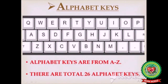After number keys, now I am going to explain alphabet keys. These keys are called alphabet keys. Alphabet keys are present in the middle of the keyboard and are used for typing letters and words. There are total 26 alphabet keys and these keys are marked with alphabets from A to Z.